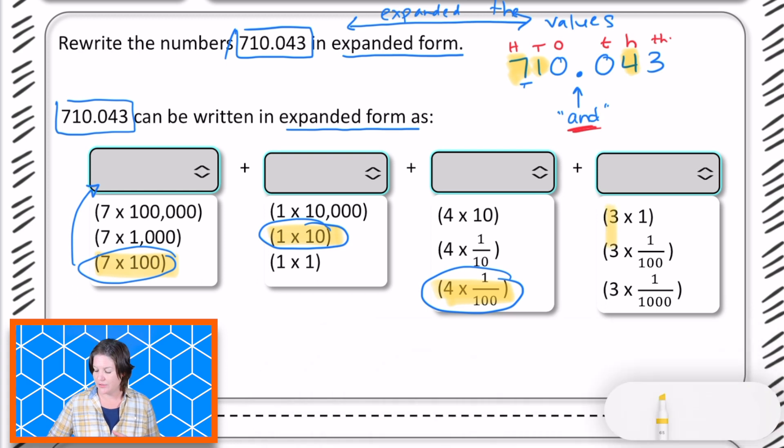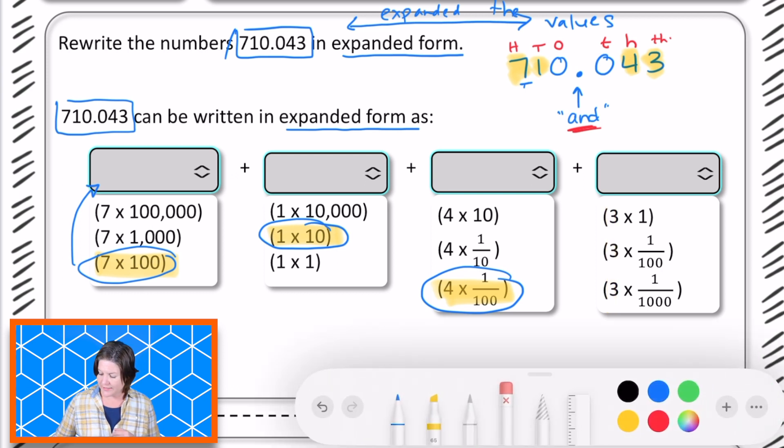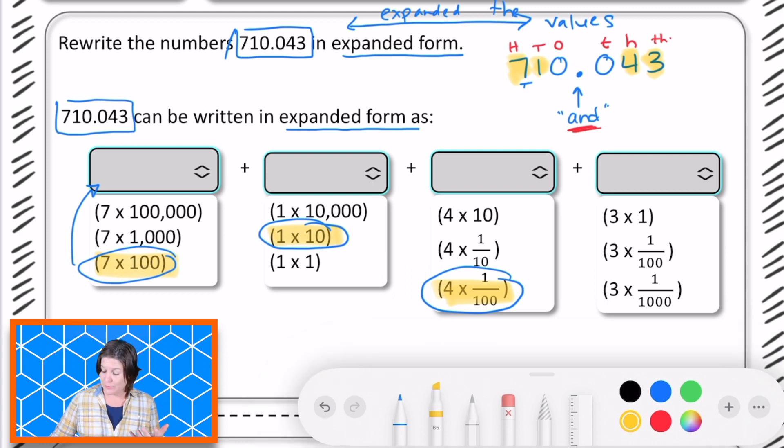And finally we have the digit three right here and that three is in which place? The thousandths place. Don't forget that s at the end. So if somebody were looking at this and not seeing the decimal point but instead putting a comma they would probably pick this one right here right? Three times one because it looks like it could be in the ones place but we know that's a decimal point and behind that we have values that are less than one. So it's not three times one and it's not three times one hundredth because the three is not in the hundredths place. It's in the thousandths place. So we're going to click or select that one, three times one thousandth.